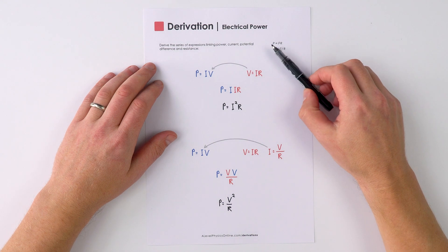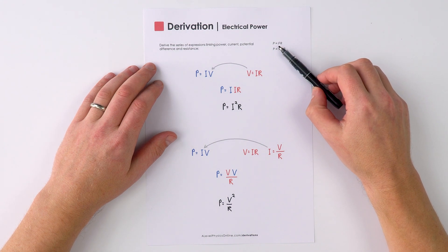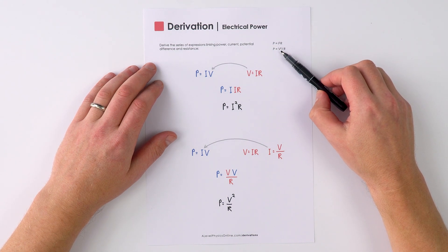For this quick derivation, we're going to be looking at electrical power in terms of current, resistance, and potential difference.